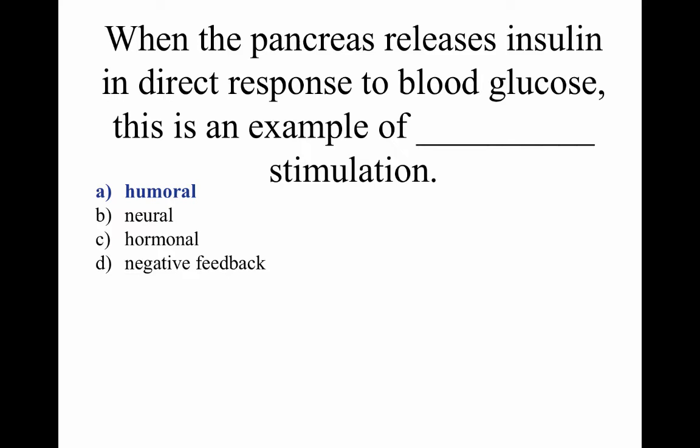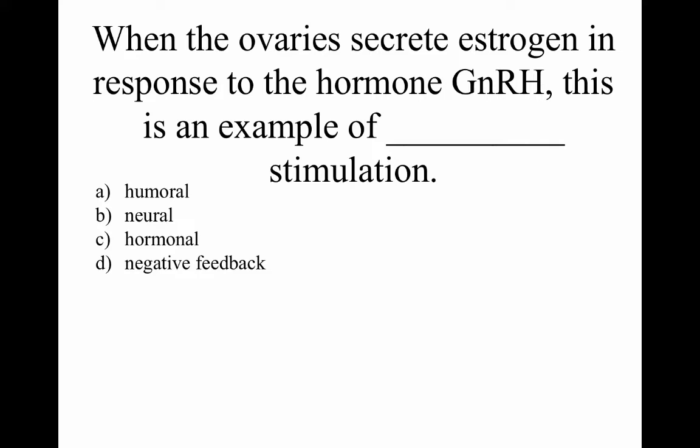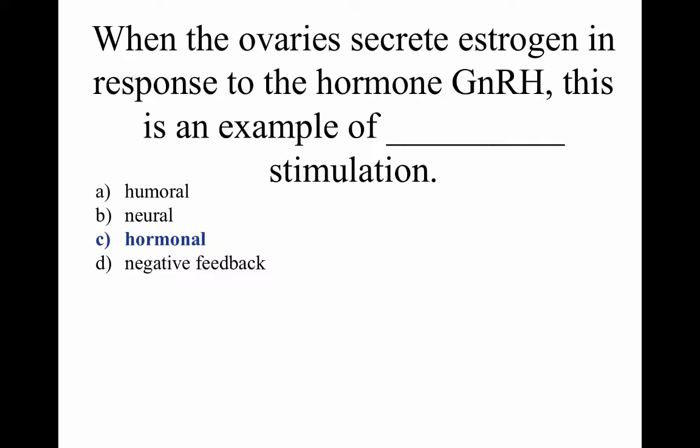Humoral stimulation refers to a component within the bloodstream — within the humors of the body. Neural stimulation releases oxytocin from the paraventricular nucleus. Hormonal stimulation: the ovaries secrete estrogen in response to GnRH — gonadotropin releasing hormone — which is an example of hormonal stimulation.